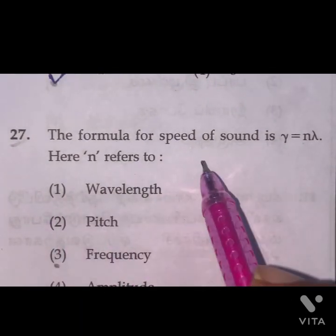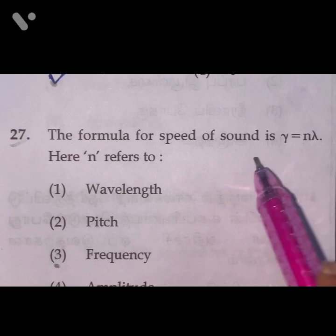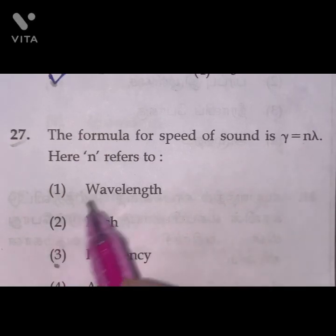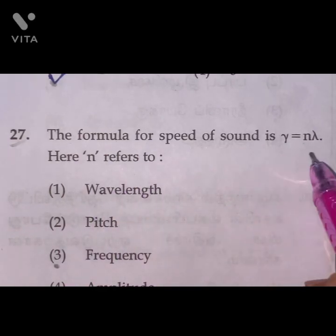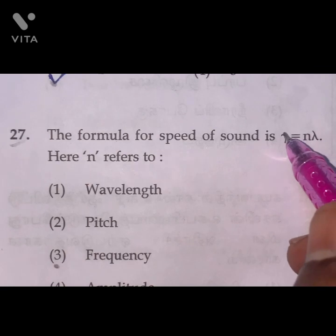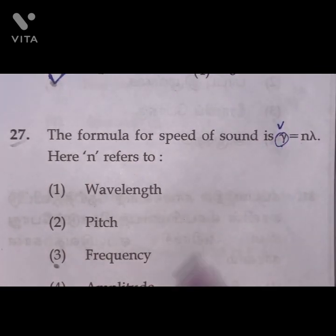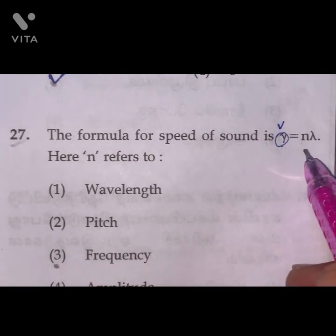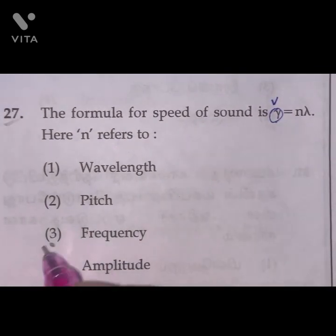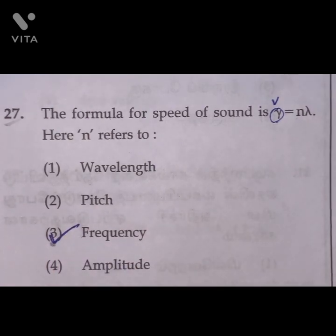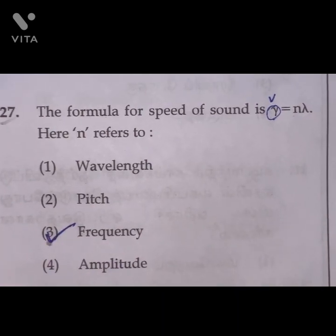Question 27: The formula for speed of sound is v = n·lambda. Here n represents frequency. So option C, the third one, is the right answer.